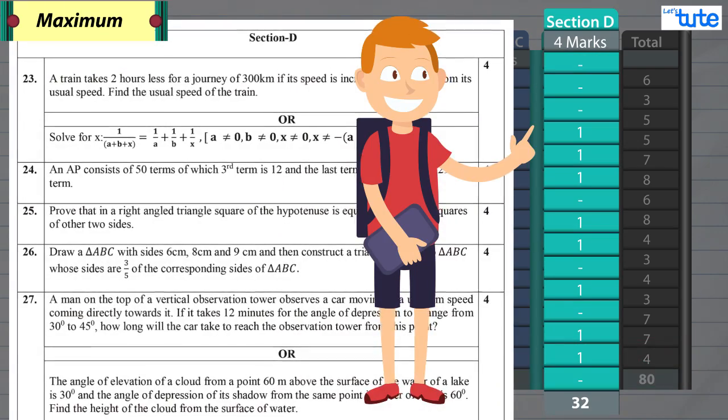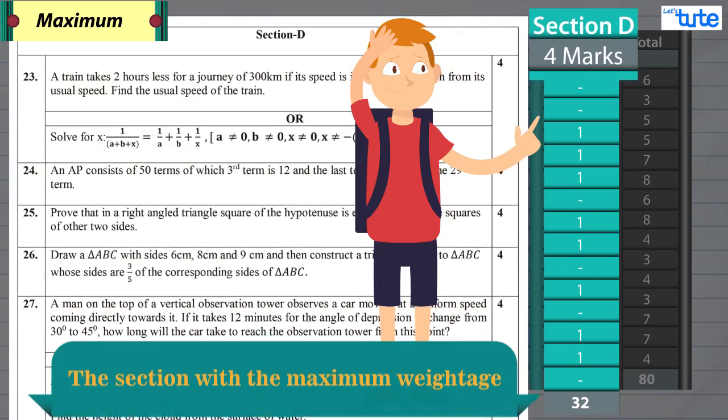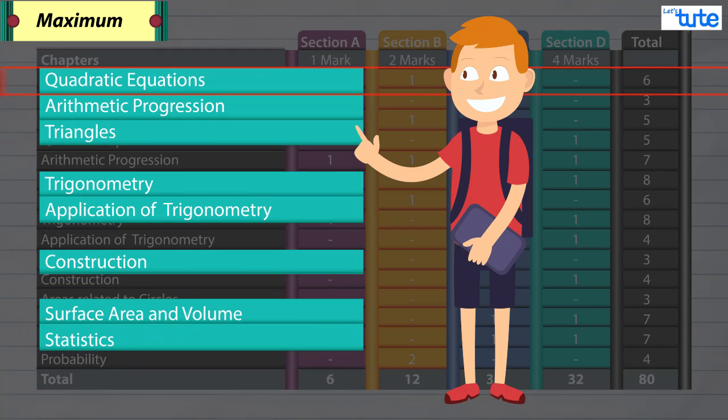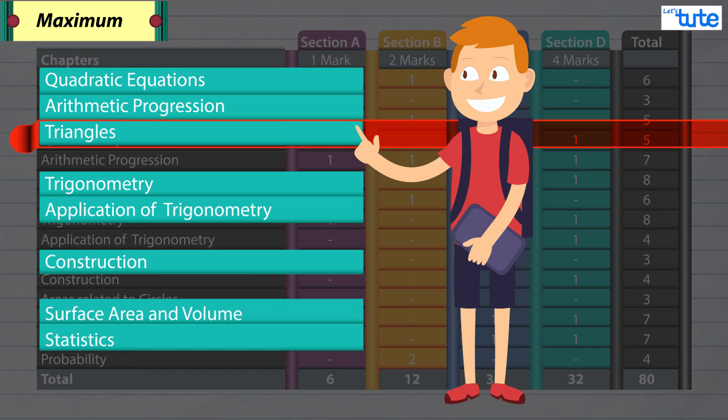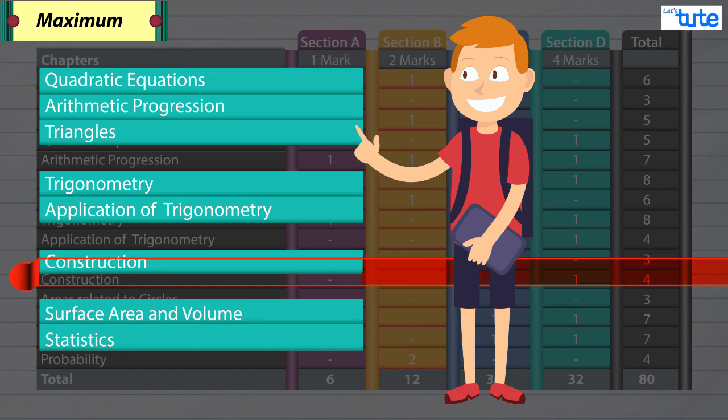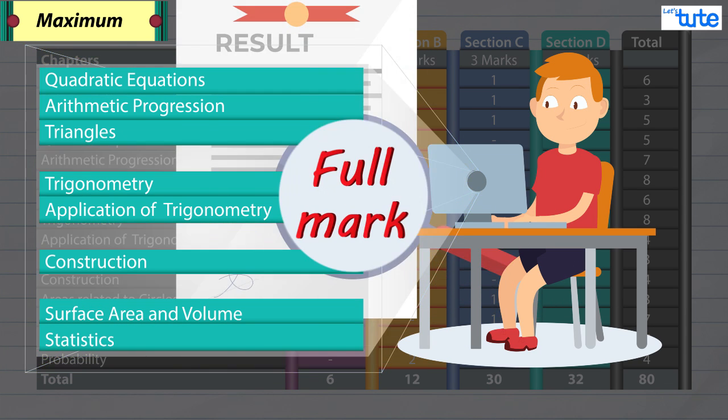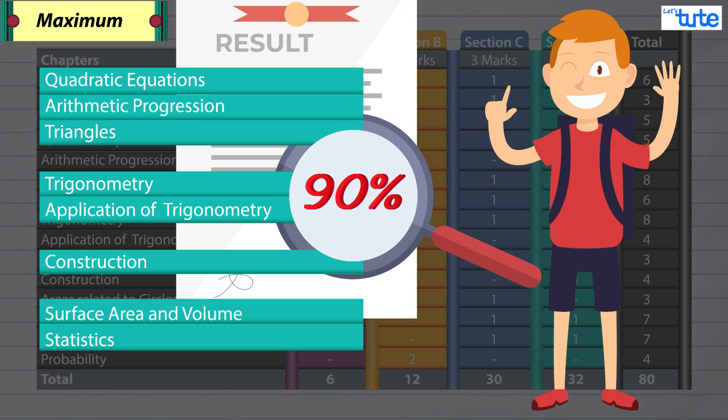For section D, this is considered to be the difficult section but also the section with the maximum weightage. The questions are asked from these chapters only. Study these chapters thoroughly if you want to score full marks or 90% also.